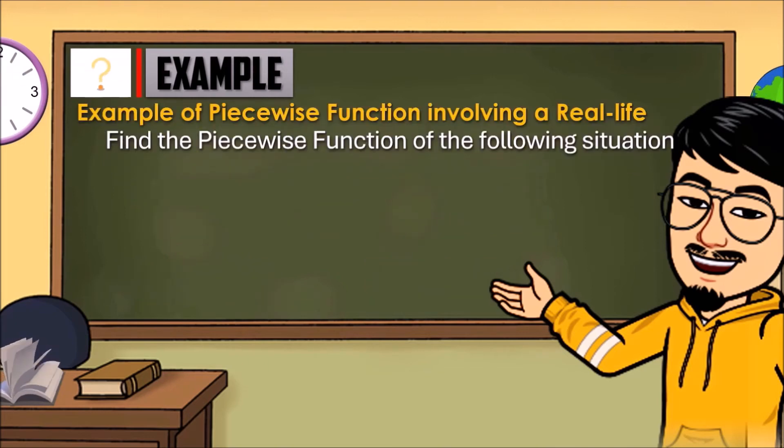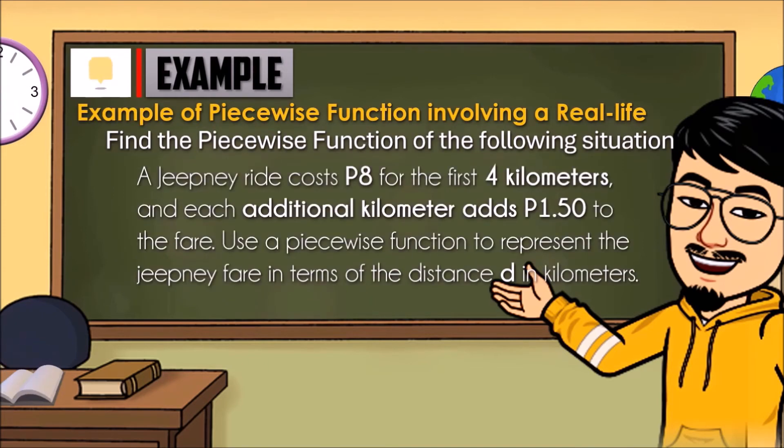Sample number 2. The jeepney ride costs 8 pesos for the first 4 kilometers, and each additional kilometer adds P1.50 to the fare. Use piecewise function to represent the jeepney fare in terms of the distance D in kilometers.